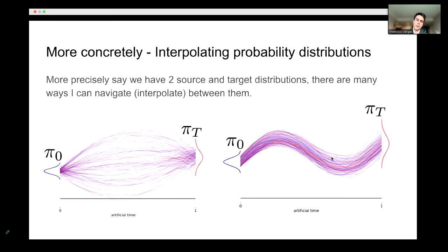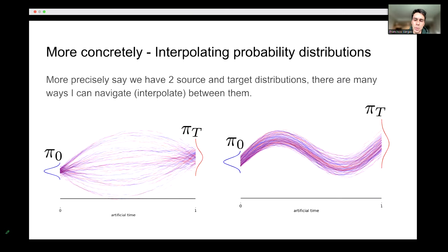For most of this talk, we'll be trying to motivate paths that are not necessarily optimal but are preferable in a computational sense. More concretely, a lot of the talk is related to the previous talk but in the context of sampling: we have a source and a target distribution and we want to navigate between them. Ultimately, we just want to learn a sampler — we don't care too much about what happens in between, but we'd like it to be learnable or fast.